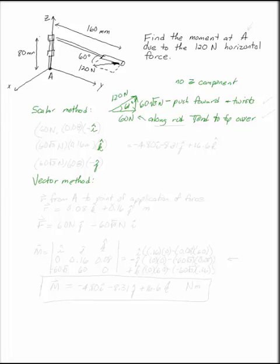In each of these cases, we already know what the distances are. So the 60 newton load, this is the one that goes along the rod, tends to tip this rod over with a distance of 0.08. Remember, it has to be the perpendicular distance, so it can't be the 160, which is in the same direction. This rotates in the negative i direction.